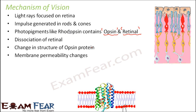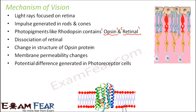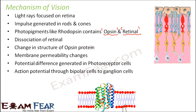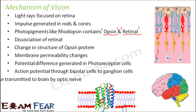This change in the structure of opsin results in changes in membrane permeability, because these proteins are present on the membranes. As a result, a potential difference is generated in the photoreceptor cells. Whenever a potential difference is generated, it can produce an action potential that travels throughout the cells — from the photoreceptor cells to the bipolar cells, and then from the bipolar cells to the ganglion cells. This impulse is then transmitted to the brain by the optic nerve.